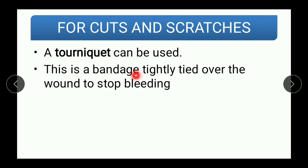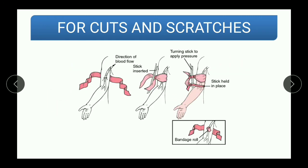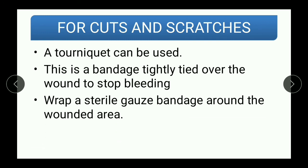A tourniquet can be very helpful in such cases. A tourniquet is a bandage tightly tied over a wound to stop bleeding. You need some cloth and a stick — you tie it in a specific way over the wound. The main purpose of using a tourniquet is to stop bleeding. To make one, wrap a sterile gauze bandage around the wounded area.